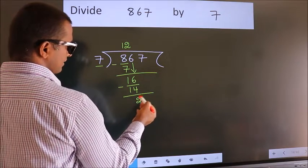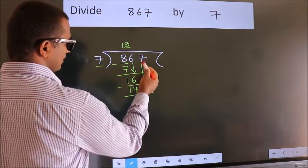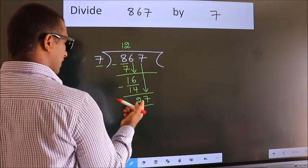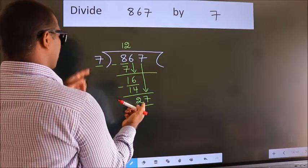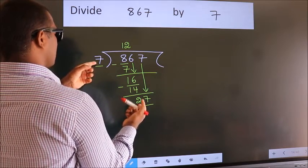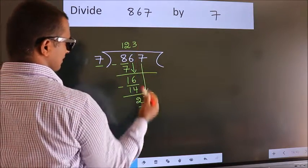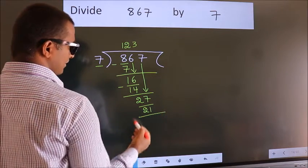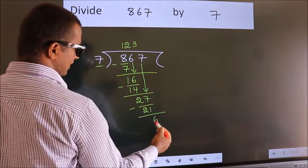After this, bring down the next number. So 7 down, making 27. A number close to 27 in the 7 table is 7 threes, which is 21. Now we subtract and get 6.